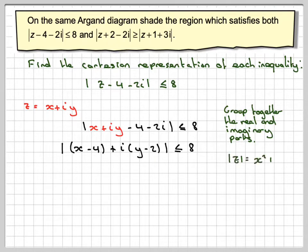Then we use the idea that the modulus equals the square root of x² + y², but instead of using the modulus, let's use the modulus squared so we don't have to deal with square root signs. We've got (x - 4)² + (y - 2)² ≤ 8² because it's an inequality.